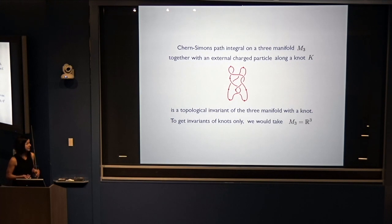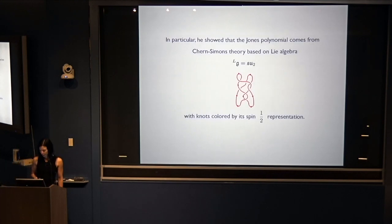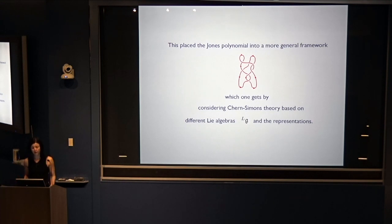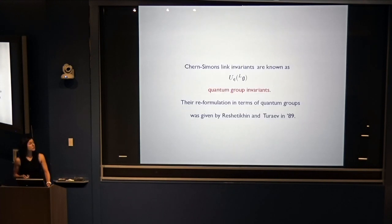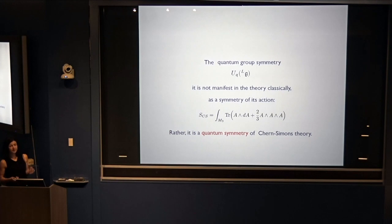If you're only interested in invariants of knots, you can take the 3-manifold to be simply R³. Witten showed that Chern-Simons theory is solvable exactly — rare for a non-trivial quantum field theory. He showed that the Jones polynomial comes from Chern-Simons theory based on Lie algebra SU(2) with knots colored by its fundamental two-dimensional representation. This placed the Jones polynomial in a more general framework by considering Chern-Simons theory based on different Lie algebras and picking different representations. In particular, the Alexander polynomial arises from the Lie superalgebra GL(1|1).